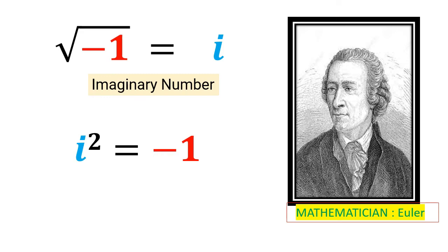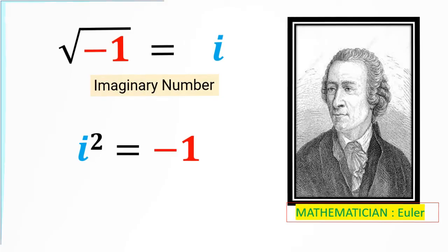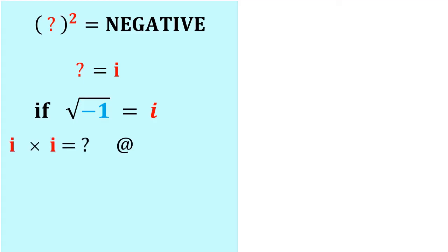So i was assumed to be a number whose square is negative 1. Now you will be able to answer these two questions. Can you think of a number which when squared results in a negative value? Yes, it is i. If square root of negative 1 is i, what is i times i or i²? It is √-1 times √-1 that gives us negative 1. Here you go.